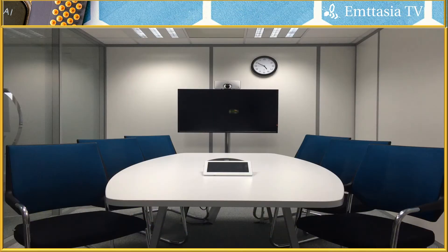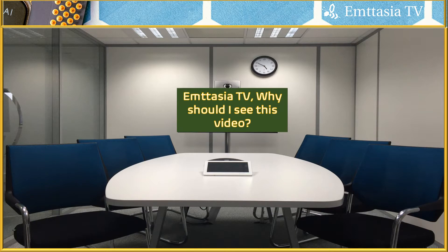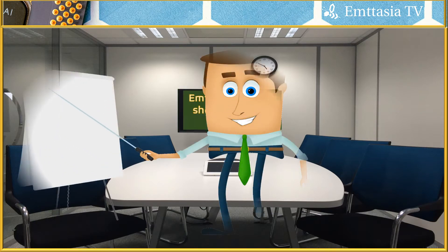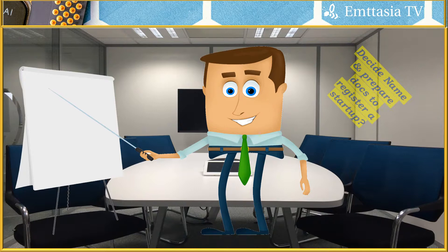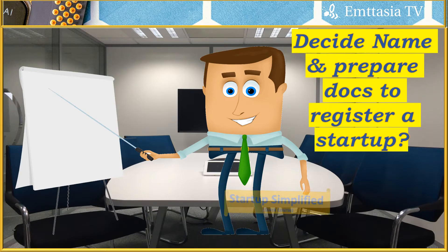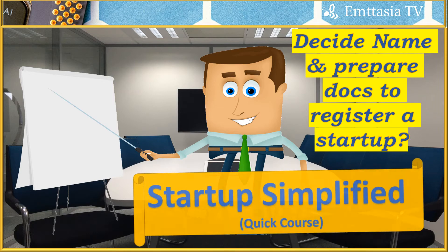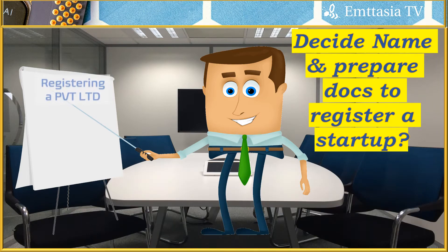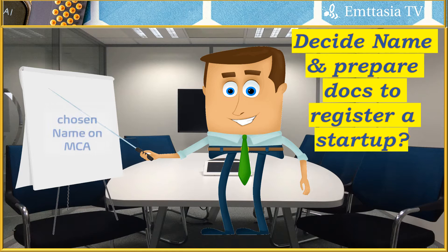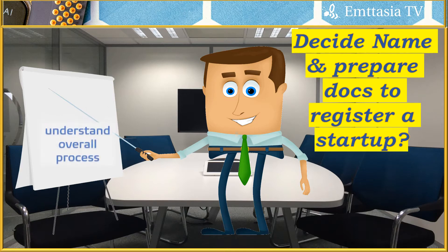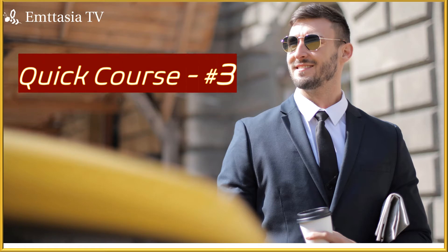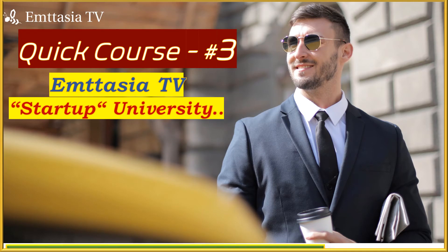Welcome to Emtasia TV. In this video you will learn how to become an entrepreneur — how to start a business or company. This is the Startup Simplified course. You will learn how to register a private limited company, what documents are required, how to decide a company name, and how to verify that chosen name on the Ministry of Corporate Affairs website. This is Quick Course 3 from Emtasia TV Startup University.